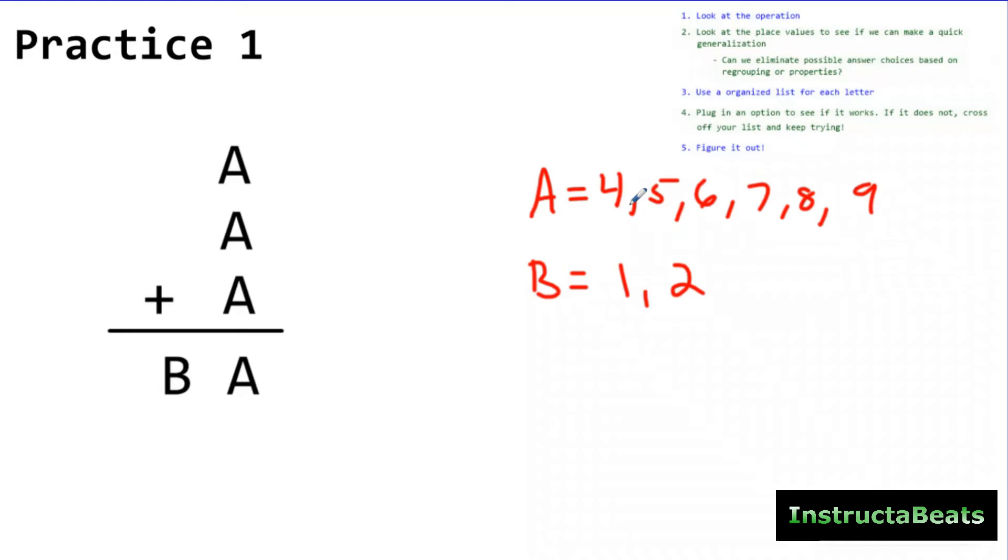So now I've made my organized list. And now I'm just going to plug in an option and see if it works. But before I do that, I know one other thing. I know that when I added A plus A plus A, it gave me a number that had to end in A. I had to regroup, so it's obviously a two-digit number. But I'm looking for a number that when you add it three different times, ends in that same digit. So for instance, if I plug in 4 for this, 4 plus 4 plus 4 would be 12. Well, if A is 4, this A can't be 2. So I know 4 does not work.